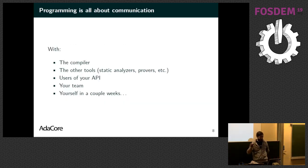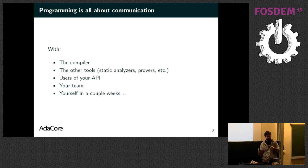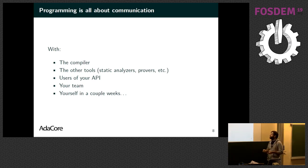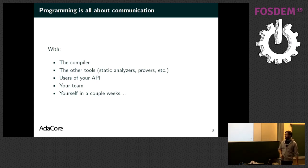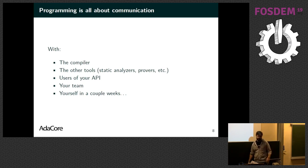This is my very personal way of explaining the philosophy of Ada and Spark. Programming is all about communication. You have something in your head, an idea, and you want to express it to different people and tools and machines. You talk with the compiler, which is going to make the code run on the CPU. You talk with other tools — static analyzers, provers. You communicate with users of your API, with your team and colleagues maintaining the software, and of course with yourself, because we all know that in two weeks we will never remember what a piece of code is doing.